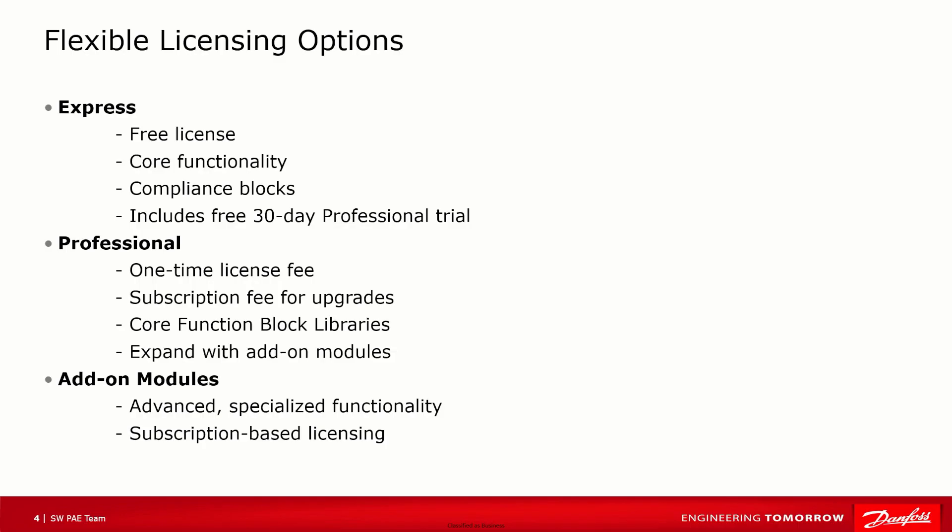The PLUS ONE Software Platform offers flexible license options for a variety of users. The Free Express version provides the basic tools for building and deploying control applications. The Professional version provides enhanced tools and libraries to help accelerate the software development process. Add-on modules can further extend the capabilities of the Professional version, and a free 30-day trial allows users to try out the system before making any purchases.